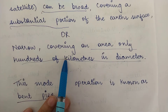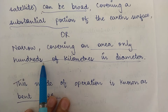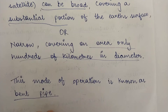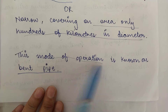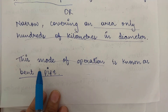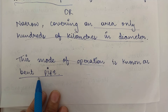So a communication satellite is capable of covering a substantial portion of the Earth's surface, and it can also be as narrow as to cover only a few or hundreds of kilometers. This mode of operation — where it can cover a large area or a very small area — is known as the bent pipe.